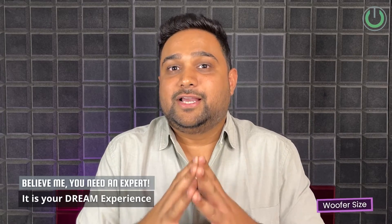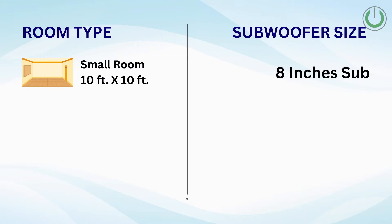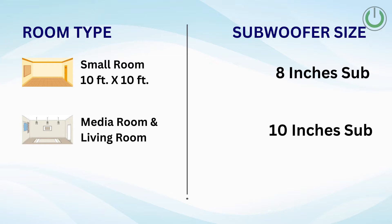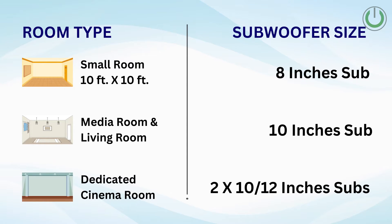The third thing while selecting a subwoofer is to understand the various sizes of the drivers or cones. Typically 8 inches is the lowest size and 18 inches is the biggest — anywhere between that is what you can use based on your room size. An 8-inch driver works well for a small 10 by 10 room, 10 inches is very common in most living rooms or media rooms, and for a dedicated cinema room, two subwoofers of 10 or 12 inches are the minimum required for a room size of 350 to 400 square feet.